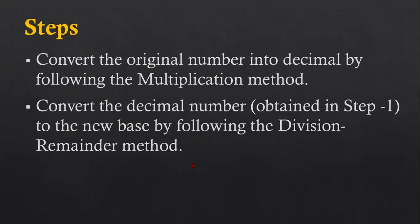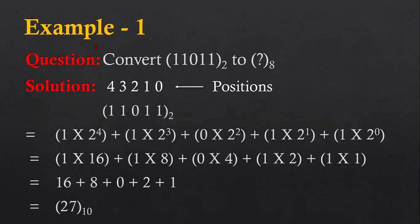Let's understand these steps with the help of an example. In example one, the question is we have to convert 11011, which has base 2, into an octal number. Here I am going to use the multiplication method. First, I am going to convert this binary number into decimal. I have identified the positions of each digit.